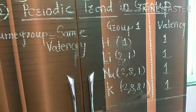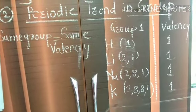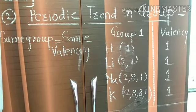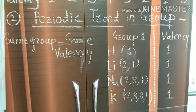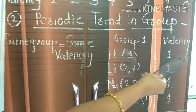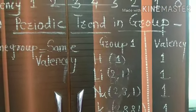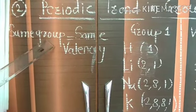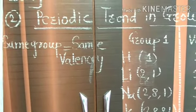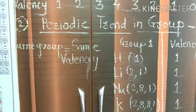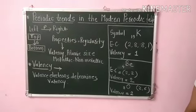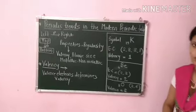Potassium has electronic configuration 2,8,8,1. If potassium donates 1 electron to another atom, it also acquires the octet state, so the valency of potassium is 1. Observing group one carefully, all elements have valency 1. This means elements in the same group have the same valency. You can determine valencies for other elements similarly. This concludes the periodic trends in the modern periodic table. Thank you.